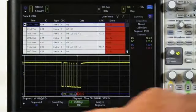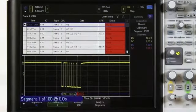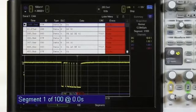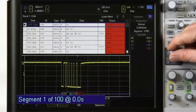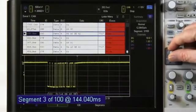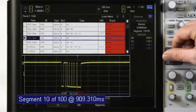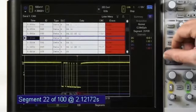Here we show the first captured error at time tag zero. Also note that all captured segments are displayed in the protocol lister table, which shows that each captured packet contained an error.